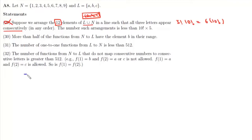Now statement number 30 is: more than half the functions from N to L have element B in their range. So we have defined functions from N to L.